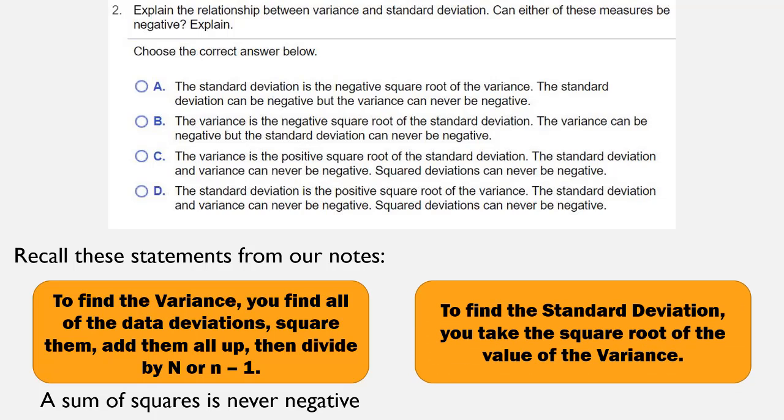And then also, to find the standard deviation, you take the square root of the value of the variance, and when we're taking square roots, those are never negative.